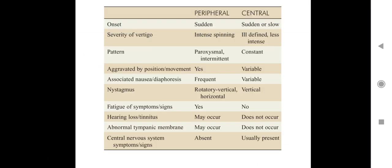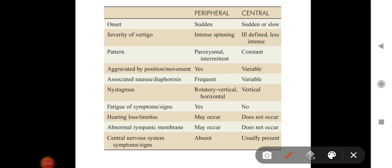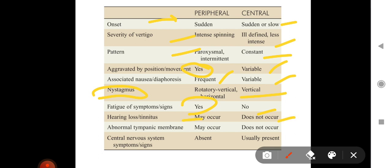Comparing peripheral and central vertigo: onset is sudden in peripheral, sudden or slow in central. Severity is intense spinning in peripheral, less intense in central. Pattern is paroxysmal or intermittent in peripheral, constant in central. Position aggravation is present in peripheral, variable in central. Associated nausea and diaphoresis are frequent in peripheral, less frequent in central. Nystagmus is rotatory, vertical, or horizontal in peripheral; only vertical in central. Fatigue of symptoms is seen in peripheral but not in central. Hearing loss or tinnitus may occur in peripheral but not in central. CNS signs are absent in peripheral but usually present in central vertigo.